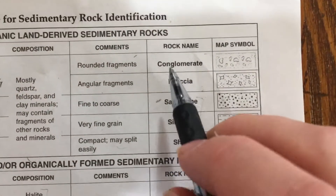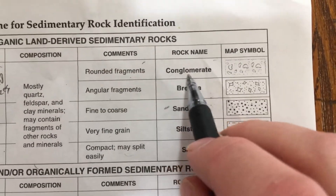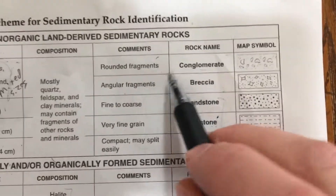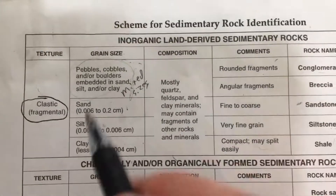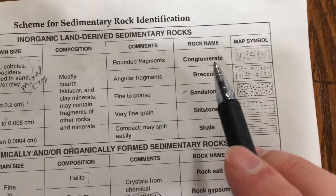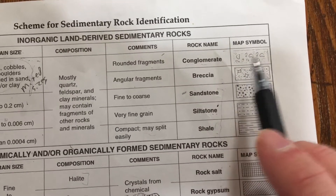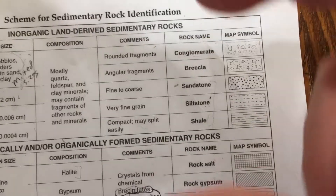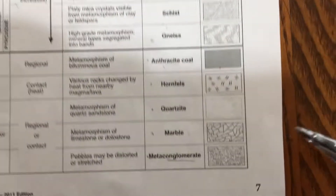If you remember, conglomerate contains rounded fragments that are of all mixed particle sizes. Take that and squish it, and you're going to take all of those mixed particle sizes but kind of flatten them and distort them.